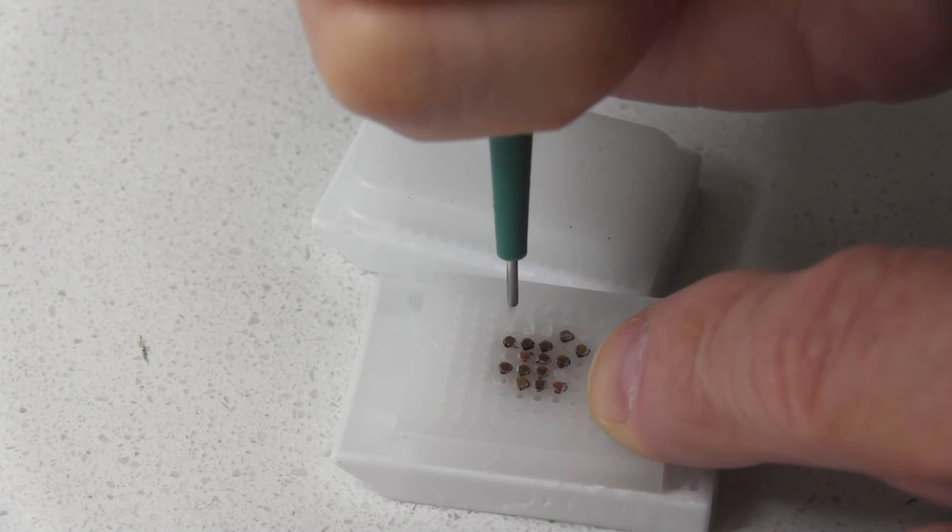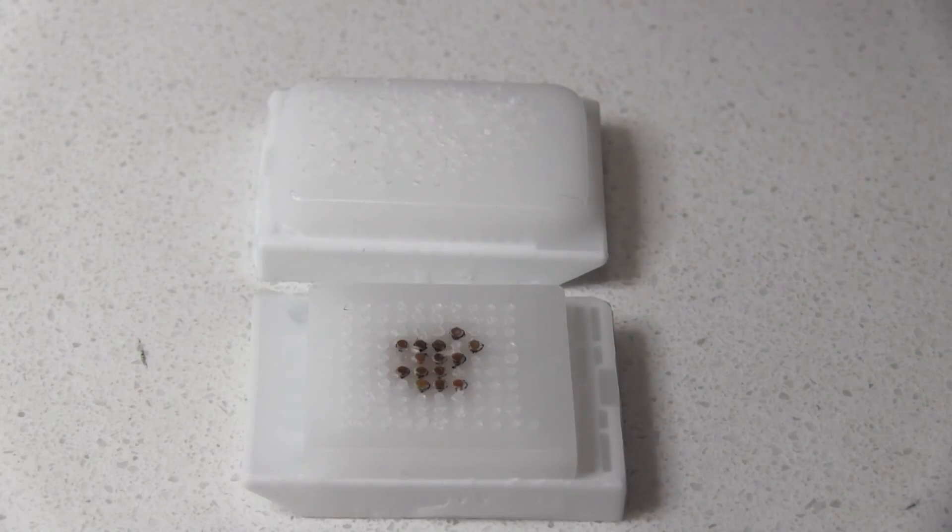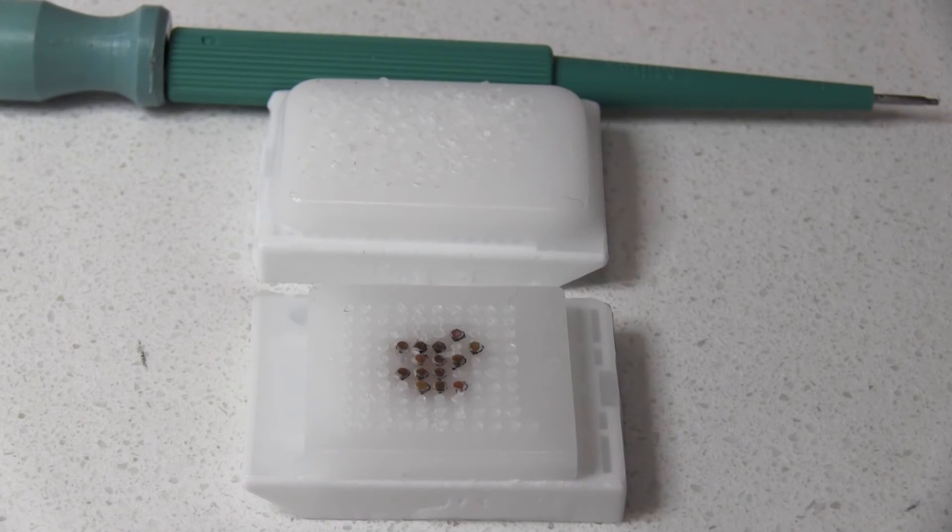If you want to do the blank paraffin cores first and then tackle the tissue cores later you can. This is a good way of getting practice before you start doing your main cores.